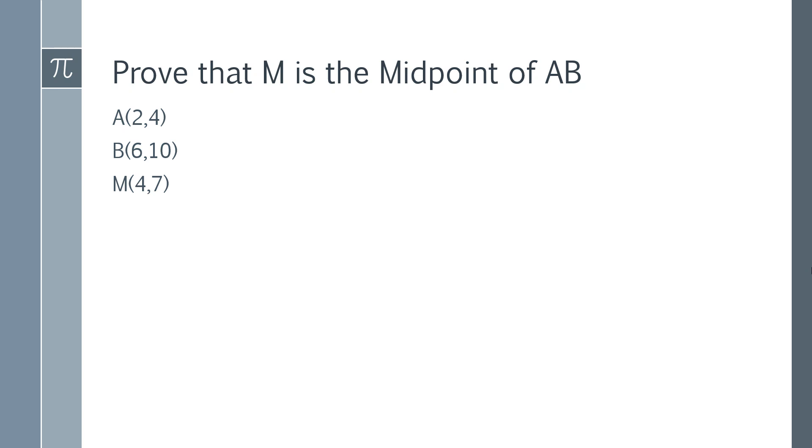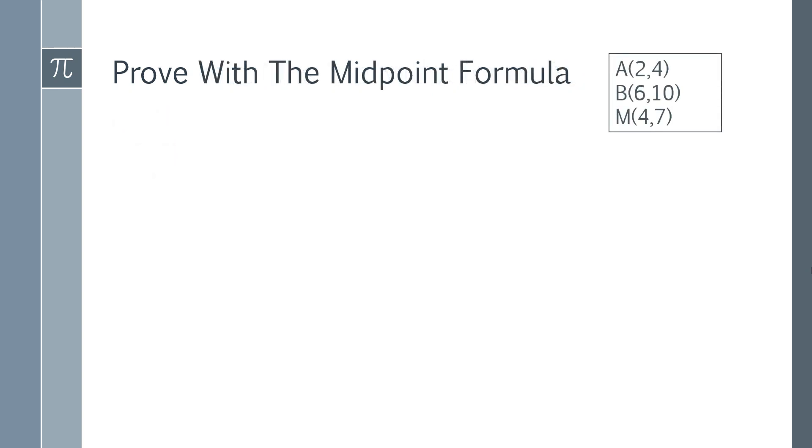We're going to suggest that M is going to be the point (4,7) and our job here is to prove that (4,7) is actually the midpoint of point A and point B joined together which is our line AB, and to do this we're going to have to use the formula called the midpoint formula.